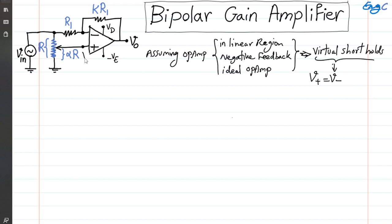The voltage at the positive terminal is a simple voltage division from Vin. We can write V positive terminal equals alpha R divided by R times Vin, which is obviously alpha times Vin. That's also the value at the negative terminal. V negative equals V positive equals alpha times Vin. This is an important outcome.